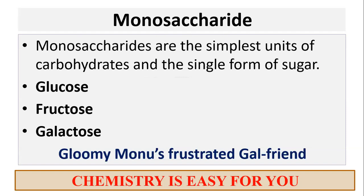Gloomy stands for glucose, monos is short for monosaccharides, frustrated is fructose, and galfriend is galactose. In one sentence you can memorize the category and the examples. Repeat after me: 'Gloomy monos, frustrated galfriend' — it stands for monosaccharides which are glucose, fructose and galactose. Hope it's really clear to you.